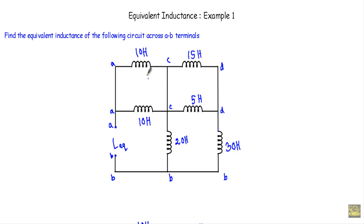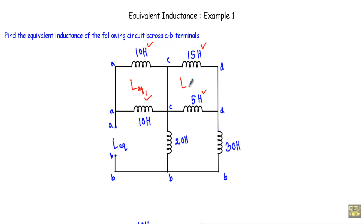Between terminal A and terminal C, you will see we have two inductors connected in parallel — 10 henry and 10 henry. Between point C and D, we have two inductors connected in parallel — 15 henry and 5 henry. I can reduce these pairs to single inductors: L equivalent 1 and L equivalent 2.